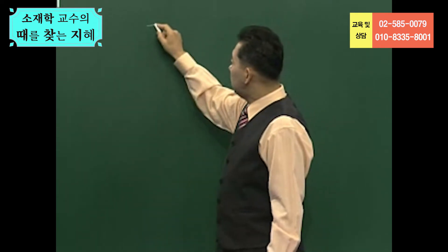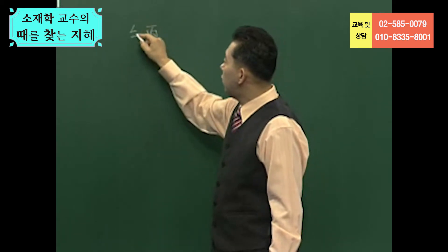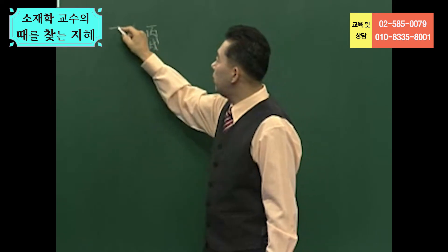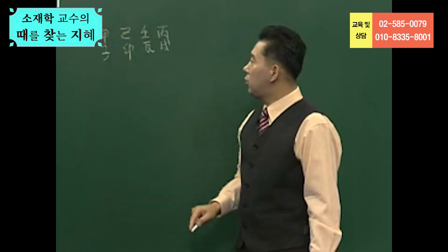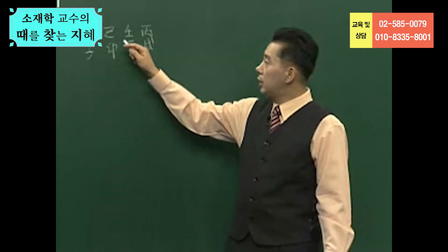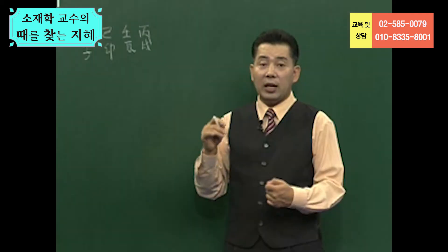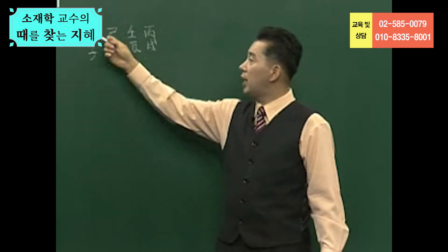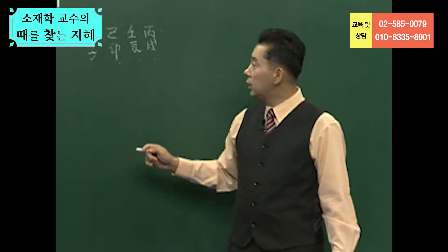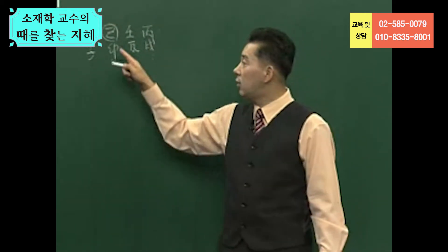지난 시간에 우리가 사주를 작성했던 게 기억나십니까? 다시 한번 해볼까요? 병술, 임진, 기묘, 갑자. 이런 사주를 지난 시간에 작성해 놓고 얘기했었는데요. 사주에서 연이 어딥니까? 연, 월, 일, 시. 위에는 천간, 밑에는 지지. 사주에서 가장 중요한 것, 기준이 되는 것은 일간이라고 했습니다. 그래서 일간이 기토.